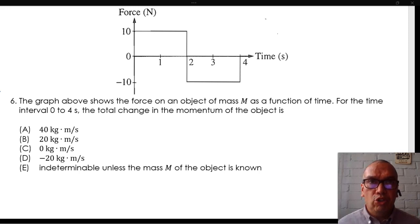The graph above shows the force on an object of mass M as a function of time. For the time interval 0 to 4 seconds, the total change in the momentum of the object is... Always keep in mind that impulse is a vector quantity.